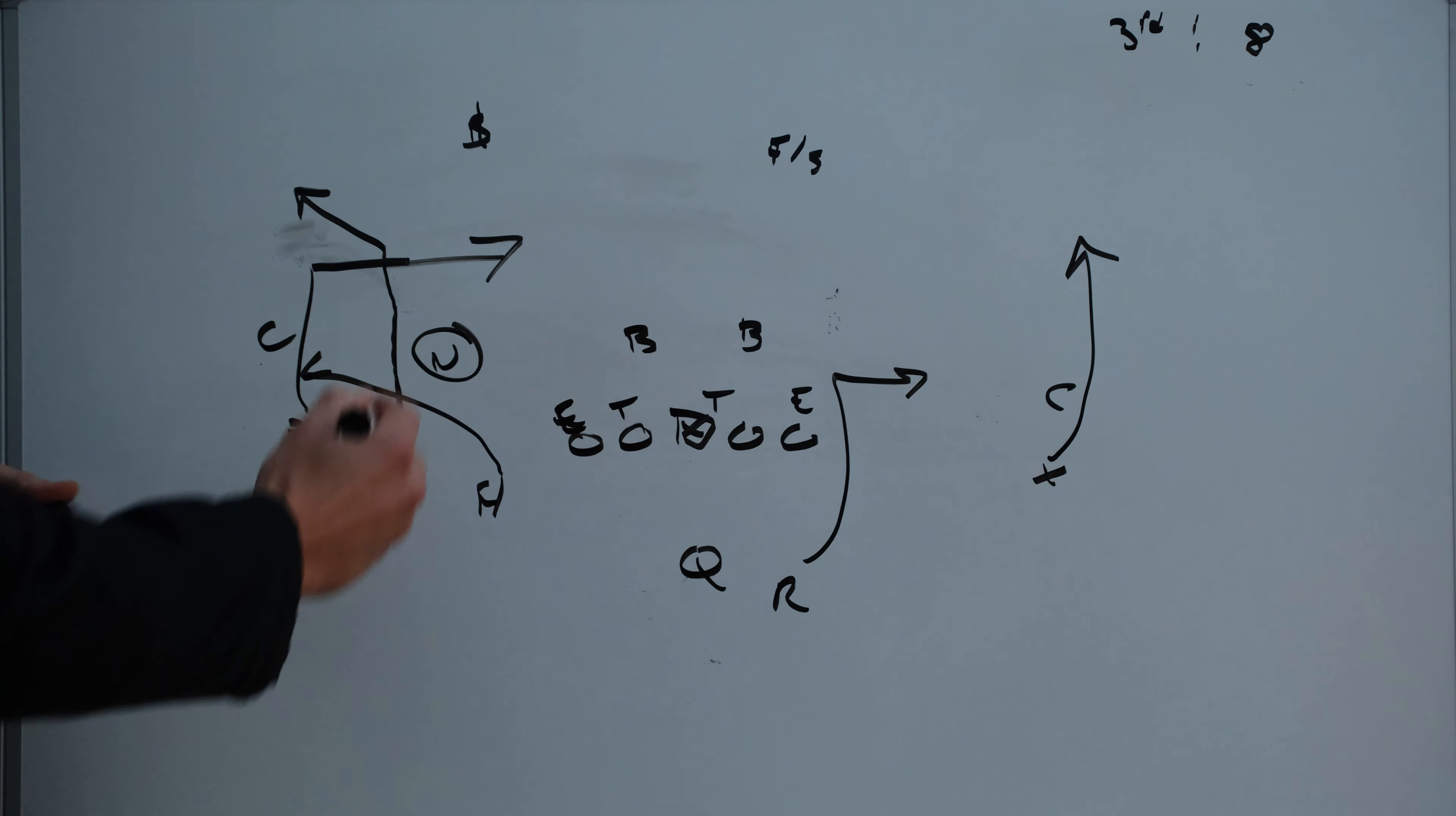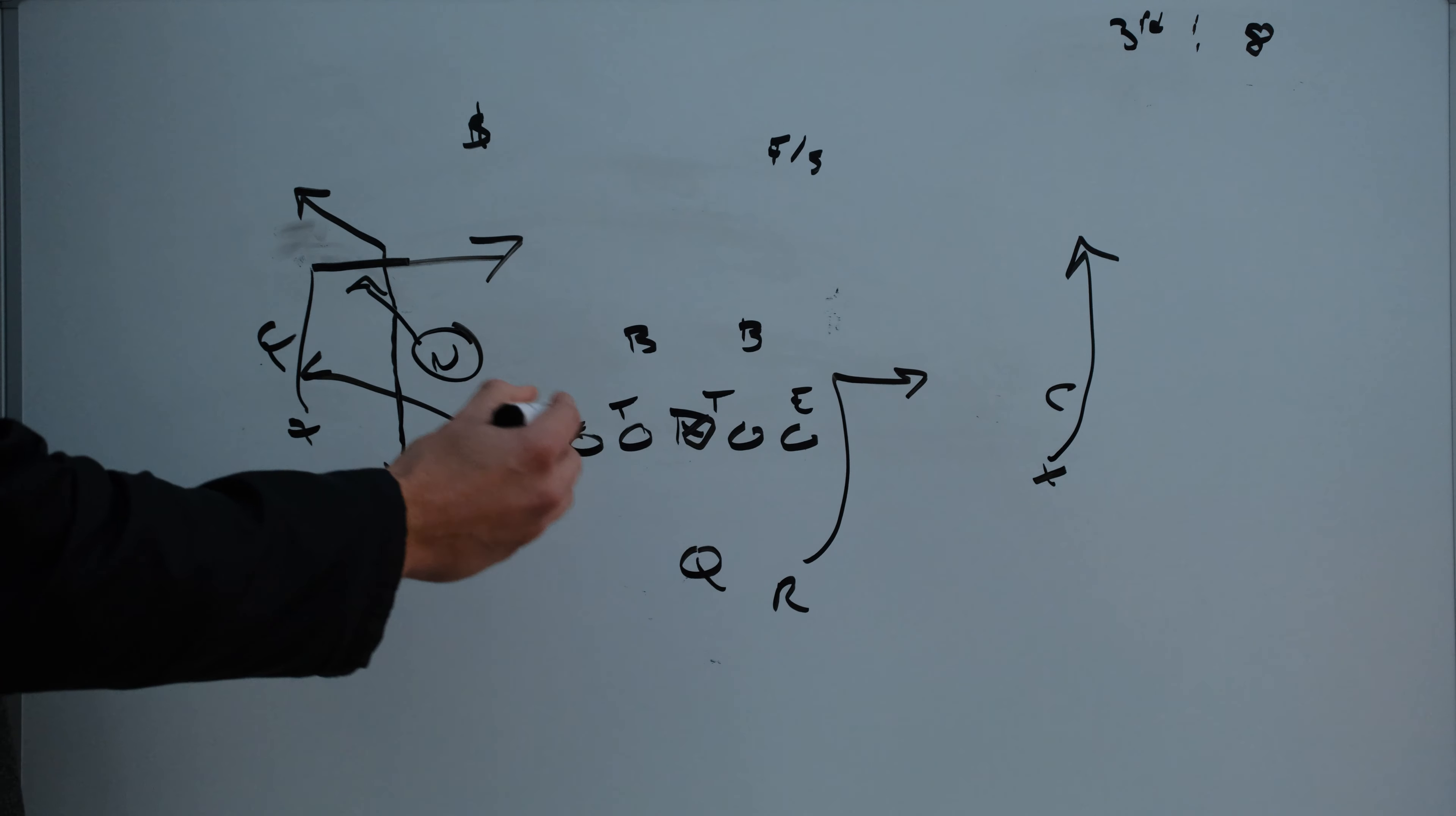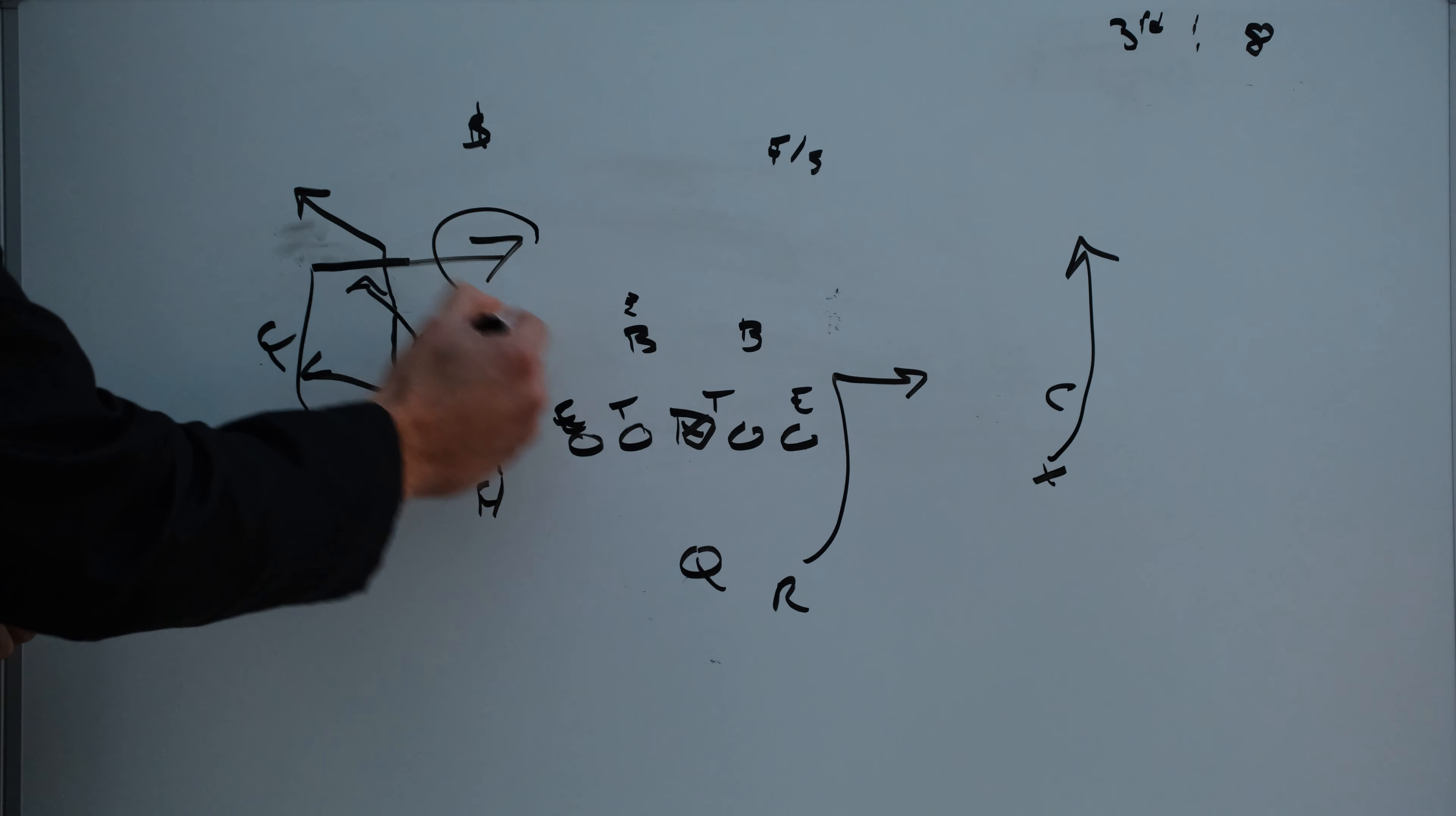In this particular clip he decides to run and try and get underneath the corner route and with this corner sitting right here on the flat route it makes this dig route pretty fairly open. Cam's main job here would be to hold this backer in the box with his eyes and he's able to find this window here for a big completion.